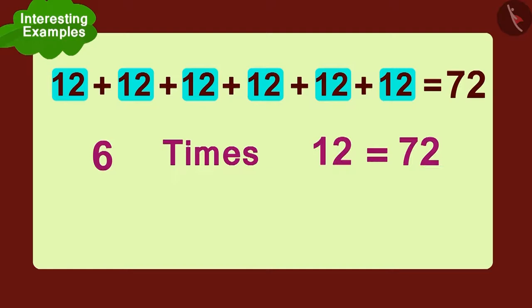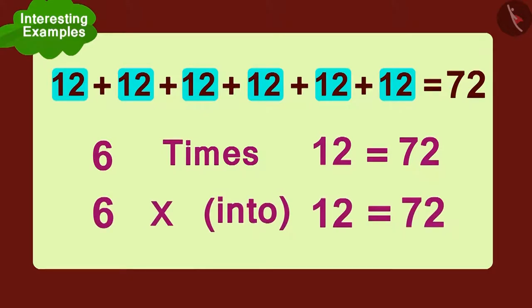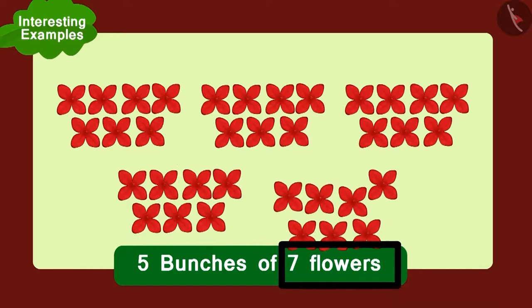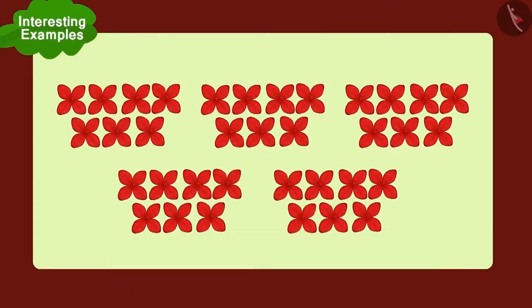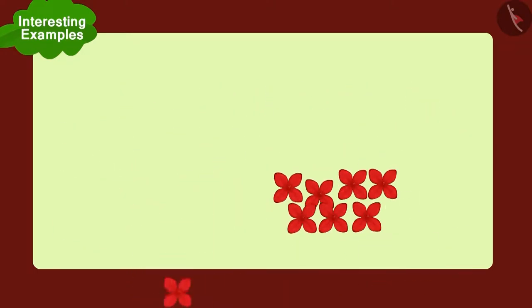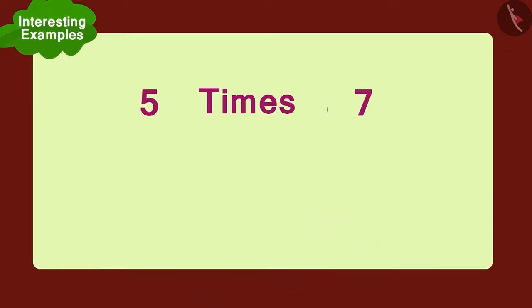At the same time, Chanda was selling five bunches of seven flowers each. Children, can you tell the total number of flowers Chanda was selling? Five times seven, or five multiplied with seven.